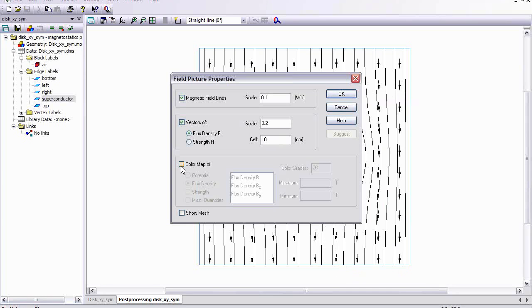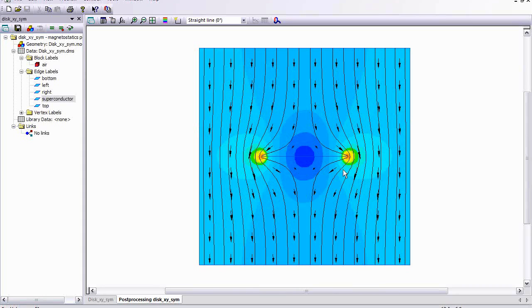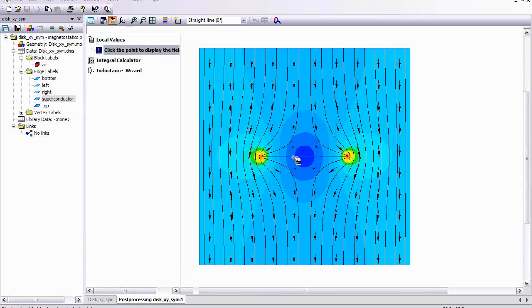Also, we can look at the magnitude of the flux density. And you can see that there is a region of screened magnetic field in the central region, whereas the magnetic flux is enhanced at the edges of the superconductor here. And if I want, I can look at individual values of the field.